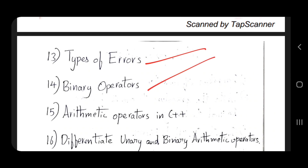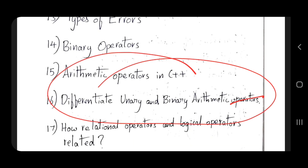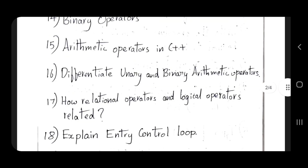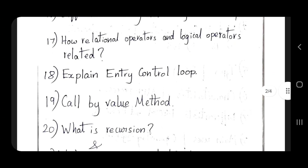Differentiate unary and binary arithmetic operators. Relational operators, logical operators - this is operators. For example, entry control loop, do-while loop, while loop, for loop - this is the syntax. Call by value method is very important for 5 marks.